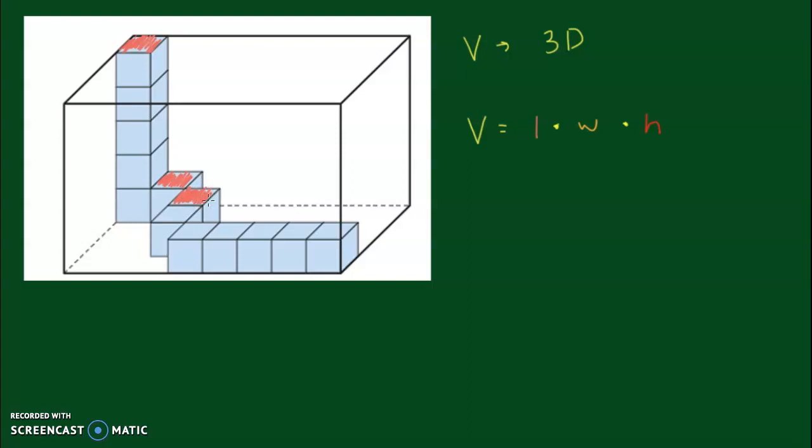they have two cubes. But, we only count the tops of one of them. So, that gives me three, four, five, six, seven, and eight.